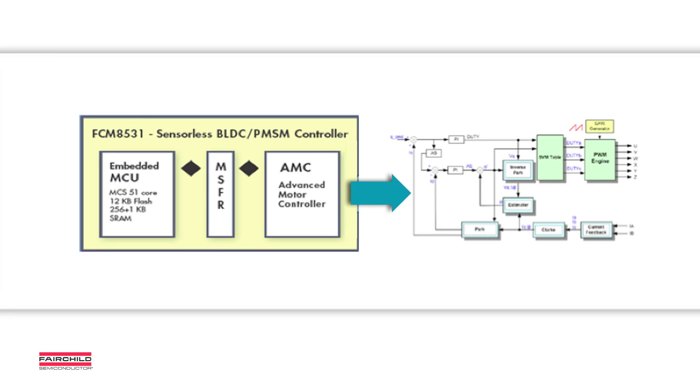The highly configurable AMC executes the complex algorithms for motor control, such as direct quadrature, or DQ, and field-oriented control, also known as FOC. This minimizes your software efforts, ultimately allowing you faster time to market.